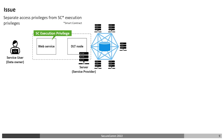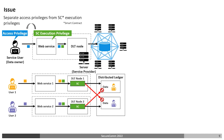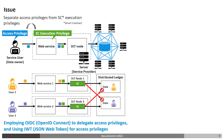Here I will summarize the issues of this research. Access privileges to the distributed ledger are separated from smart contract execution privileges. The user temporarily delegates access privileges to the web service, and the web service uses both access privileges and smart contract execution privileges to access the distributed ledger. Each user deposits data in the distributed ledger and each web service has smart contract execution privileges to access those data. However, web service 1 cannot access user 2's data because it does not have user 2's consent. To achieve this, we employ OIDC and JWT to delegate access privileges.